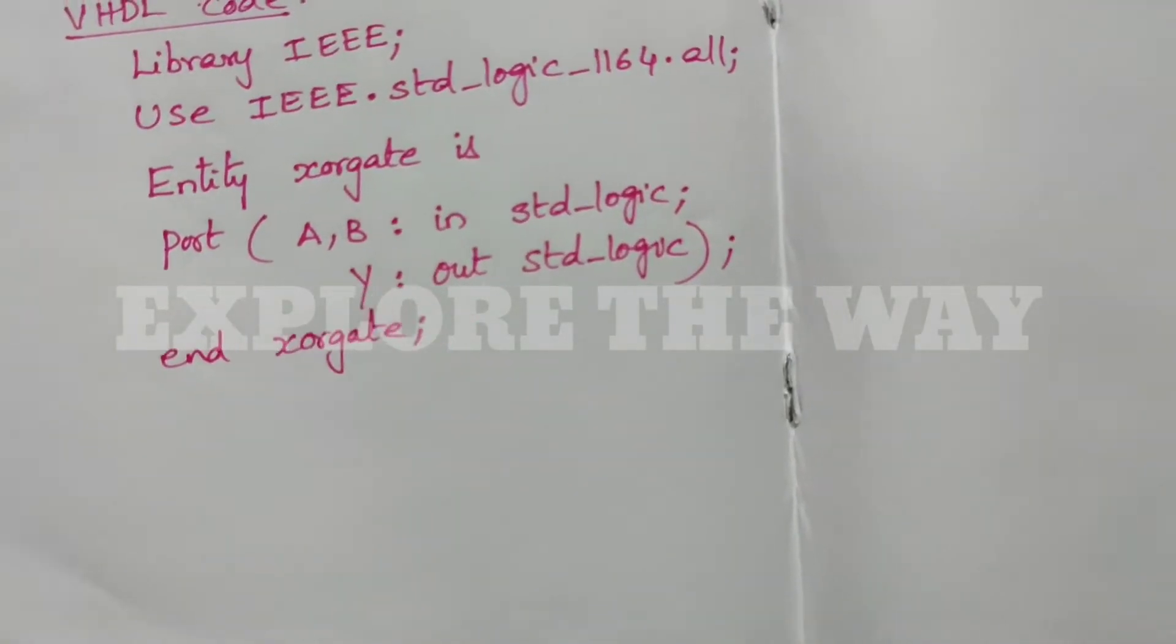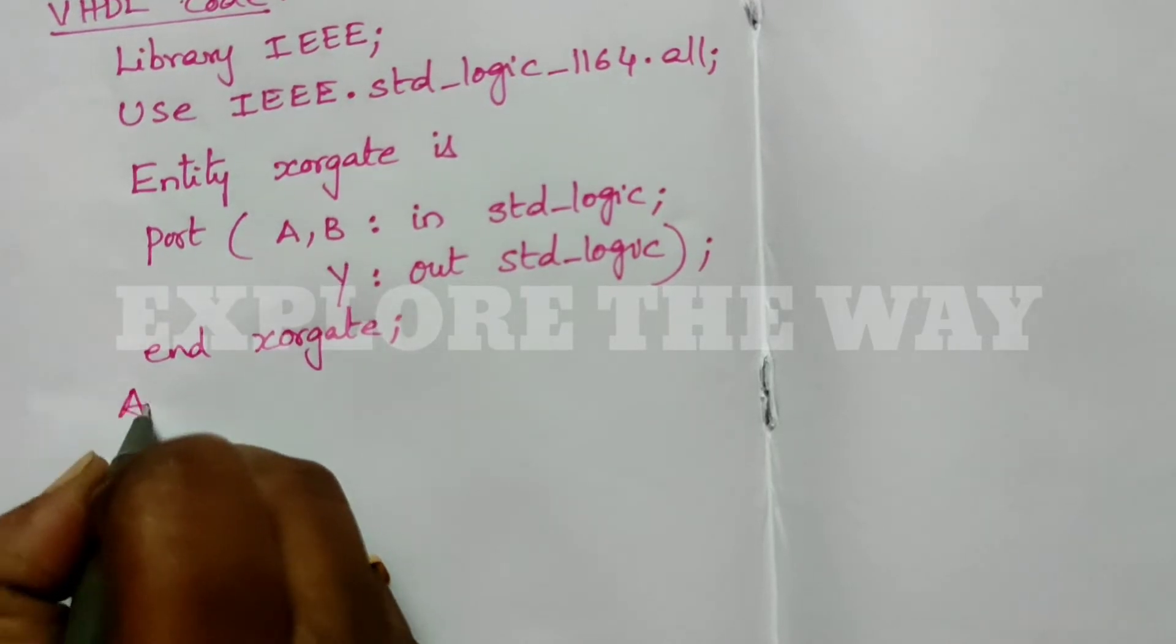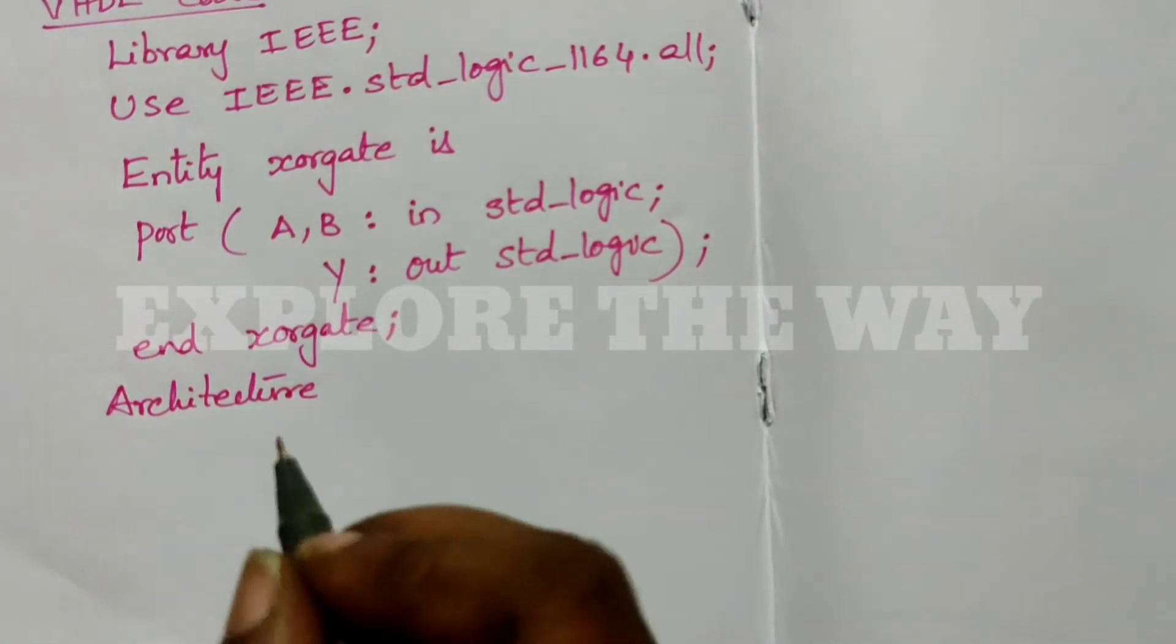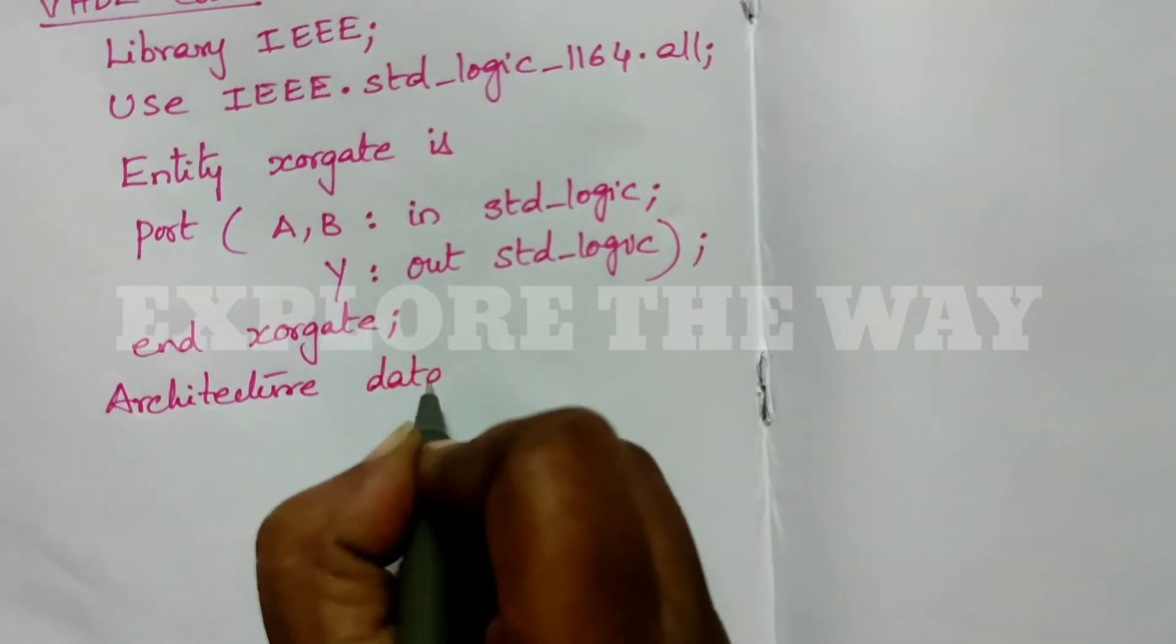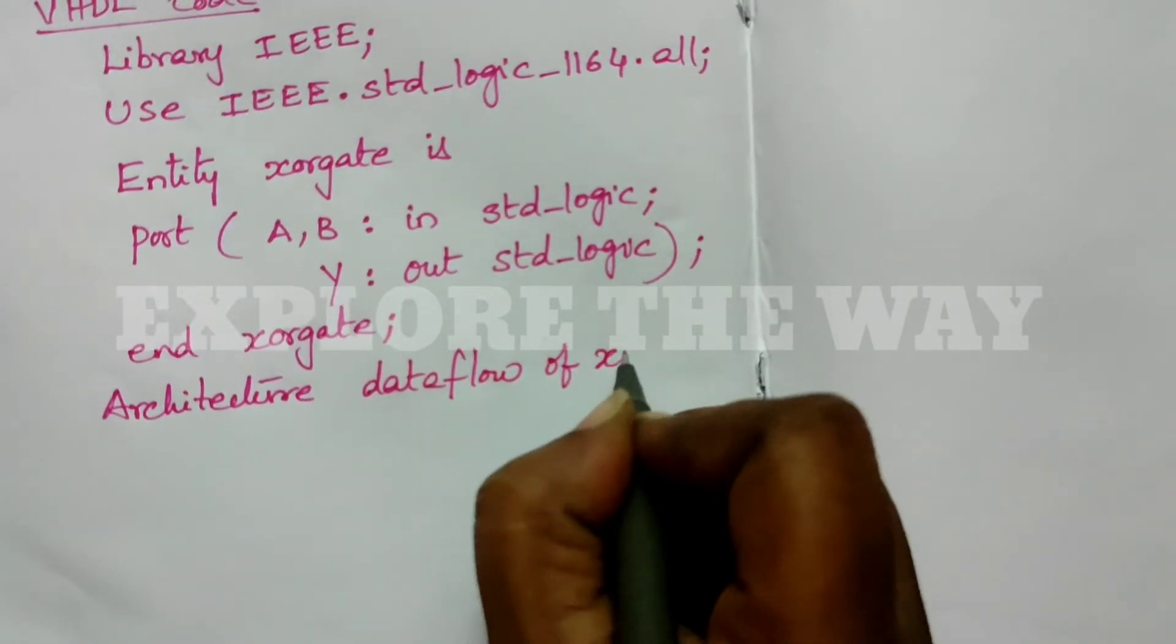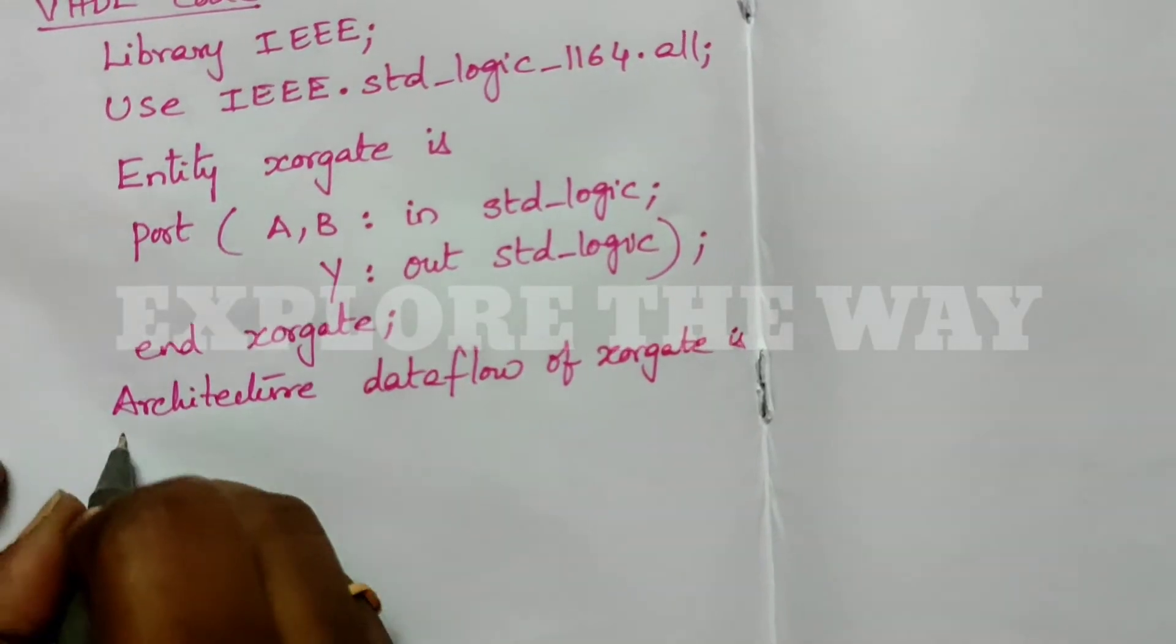The next part is Architecture. We are writing this architecture in dataflow style. So we write: Architecture dataflow of xorgate is begin.